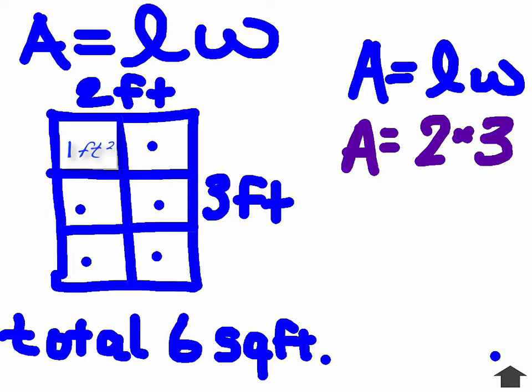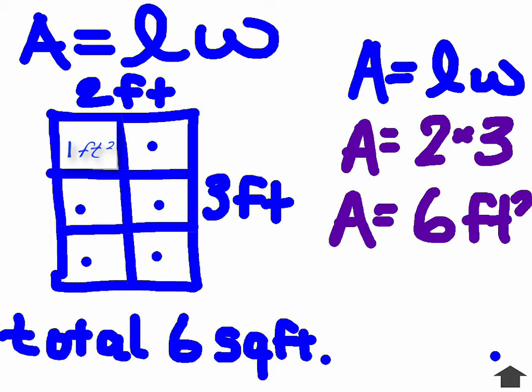And then I'm going to solve for the area. Well, two times three equals six. So the area is six feet squared. We don't forget our labels.